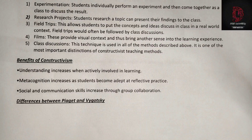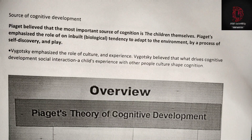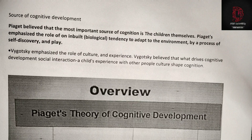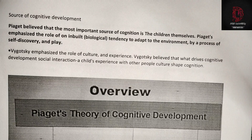Differences between Piaget and Vygotsky — source of cognitive development: Piaget believed that the most important source of cognition is the children themselves. Piaget emphasized the role of an inbuilt biological tendency to adapt to the environment by a process of self-discovery and play. Vygotsky emphasized the role of culture and experience, believing that what drives cognitive development is social interaction — a child's experience with other people and culture shapes cognition.